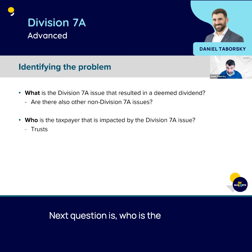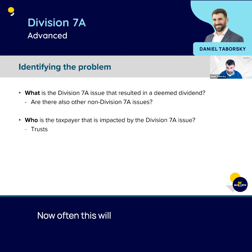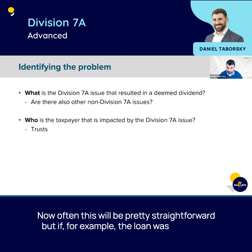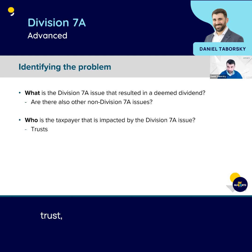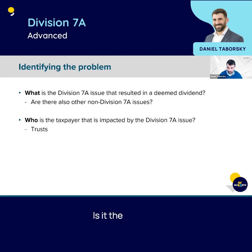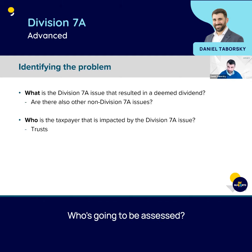The next question is: who is the taxpayer? Often this will be pretty straightforward. But if, for example, the loan was made to a trust, who's the taxpayer in that situation? Is it the trustee? Is it one of the beneficiaries? Who's going to be assessed?